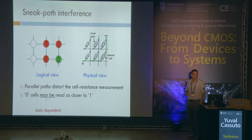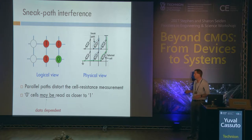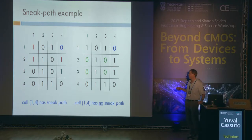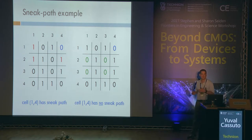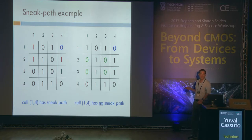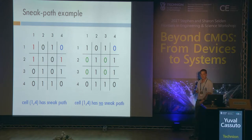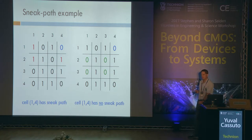This is a very important fact: sneak paths are data dependent. That zero was unlucky because other data bits in the array were one — the red ones — and created a sneak path that affected the reliability of reading that blue zero. On the right, we are more lucky because there was no sneak path. So whether we have a sneak path and how many depends on the data, and that will be central to our solution.